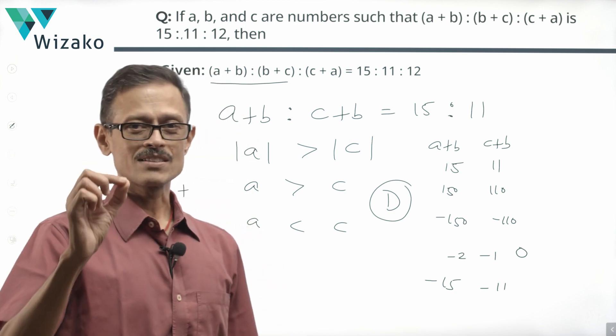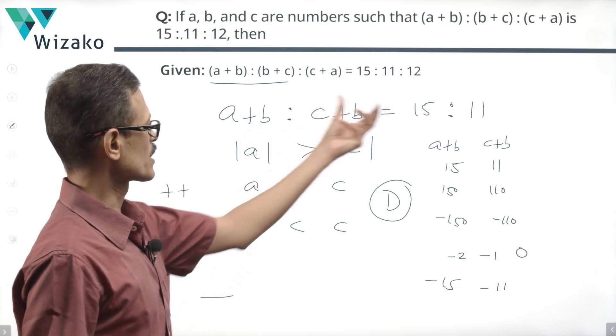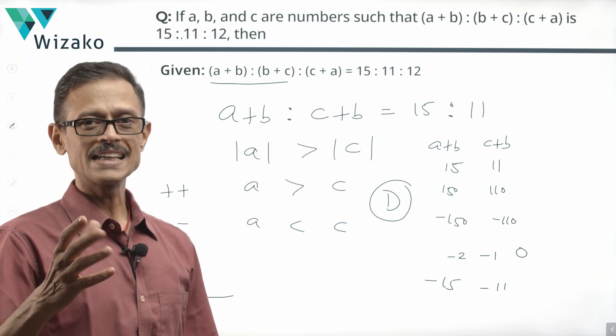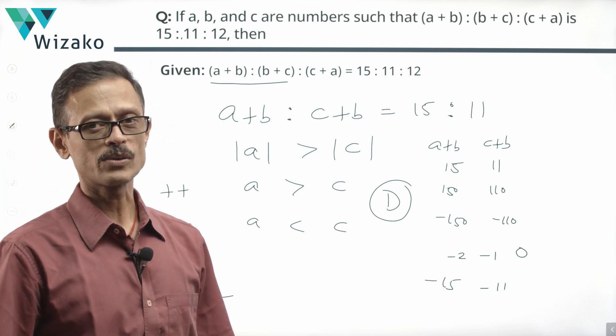The trap in this is we will miss out the possibility of a and c being negative. When we see this ratio comparison, we'll immediately deduce that a is greater than c. It's not that a is greater than c. It's the magnitude of a is greater than magnitude of c.